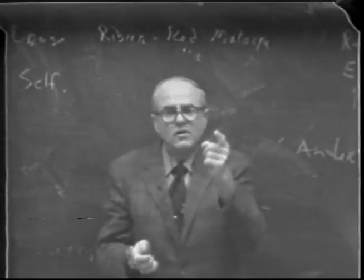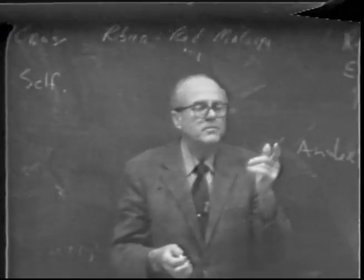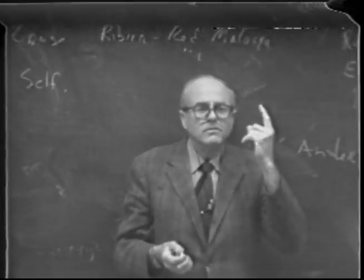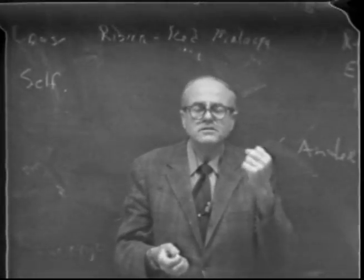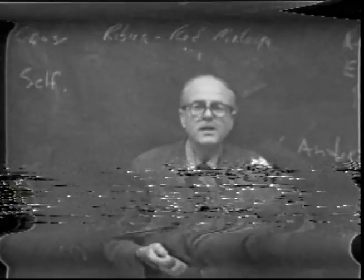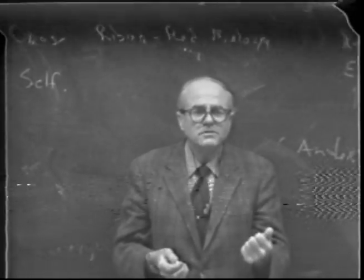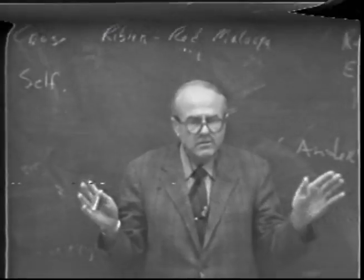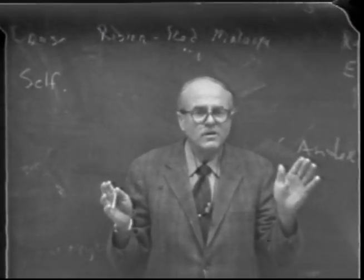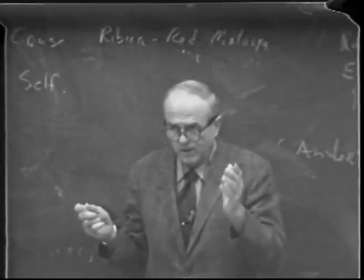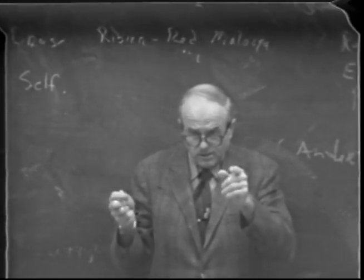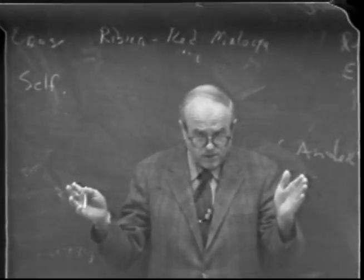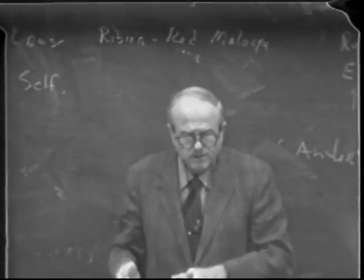Now, there has been no commercial variety developed by selfing. Whenever you self, you lose vigor — you go downhill, the seedlings are always very weak, they never amount to anything. So developing varieties by selfing is out. The only way to maintain vigor in a variety is by crossing with at least another variety. In other words, you cannot inbreed; you have to outbreed all the time.